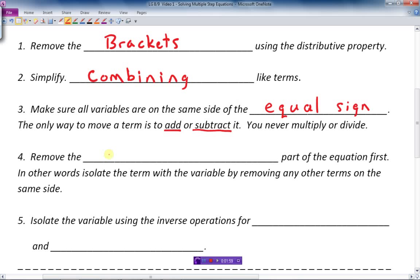Number four, remove the addition or subtraction part of the equation first. So if you've got the left-hand side, say if x is over there and other terms, you isolate the term that has the variable in it by removing any other terms. In this case, again, you add or subtract them.